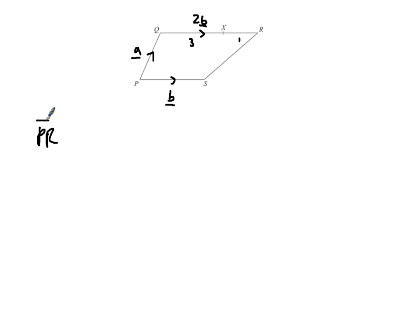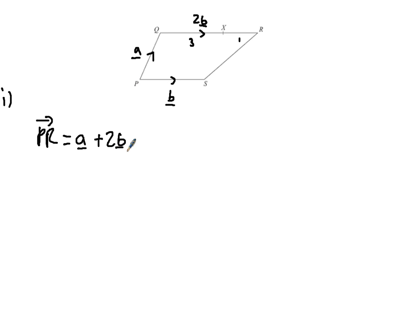Express in terms of a and b the vector PR. Think of it like a journey — how do I go from P to R? I can walk along PQ then along QR. Walking along PQ gives me a, then adding QR which is 2b. So PR = a + 2b.